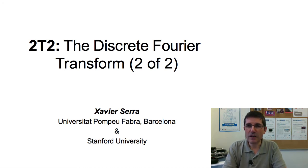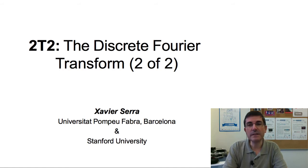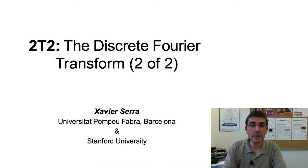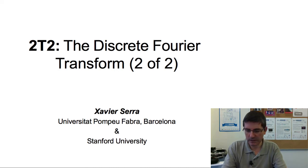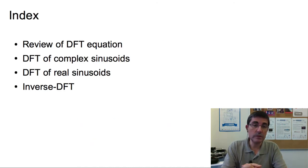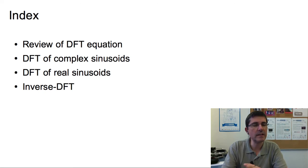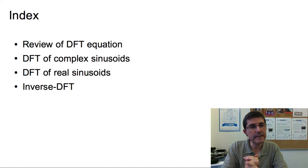Welcome back to the course on Audio Signal Processing for Music Applications. We are in the second week of the course, and this is the second part of the lecture on the discrete Fourier transform. In the first part, we focused on the basic equation of the DFT. We will briefly review the DFT equation, and then we will talk about how the DFT works when our input signal is a complex sinusoid or when it's a real sinusoid, and then we will talk about the inverse DFT.